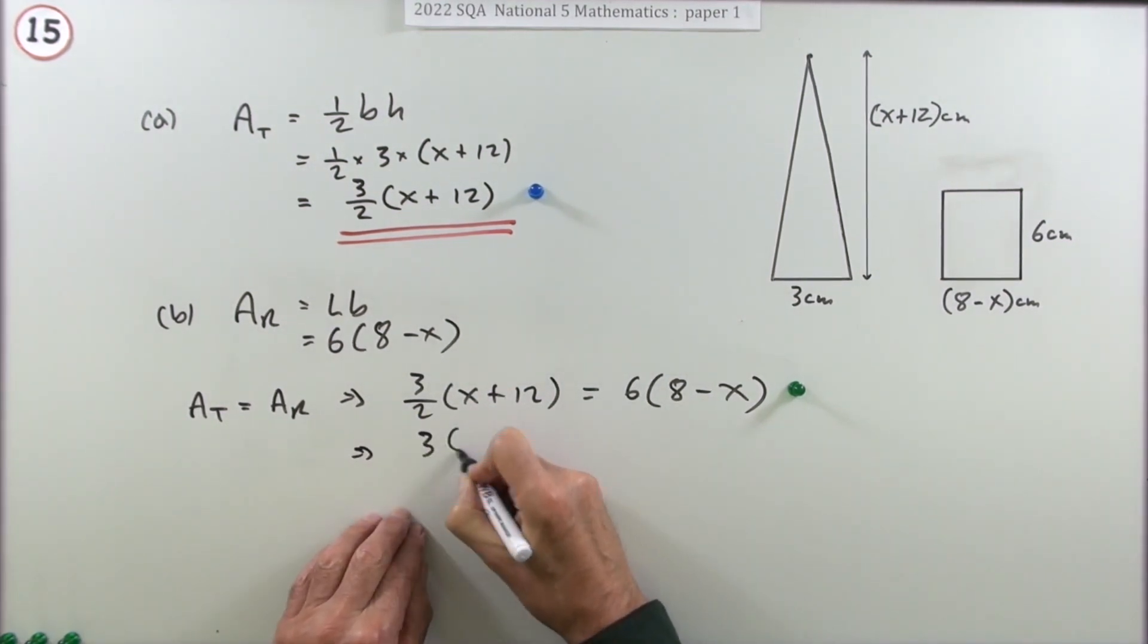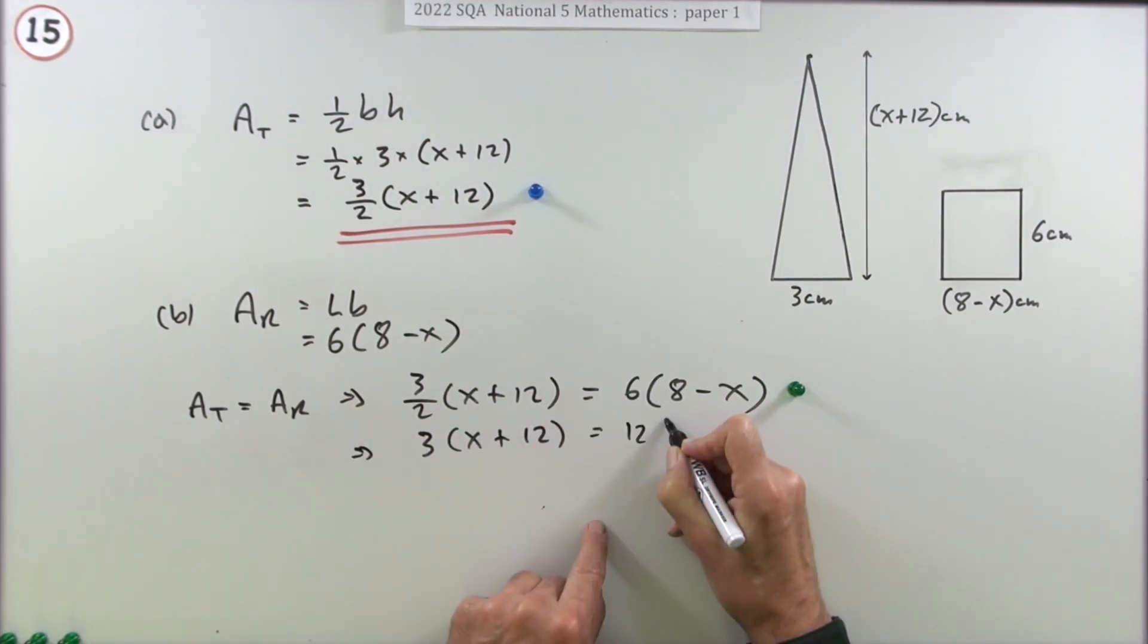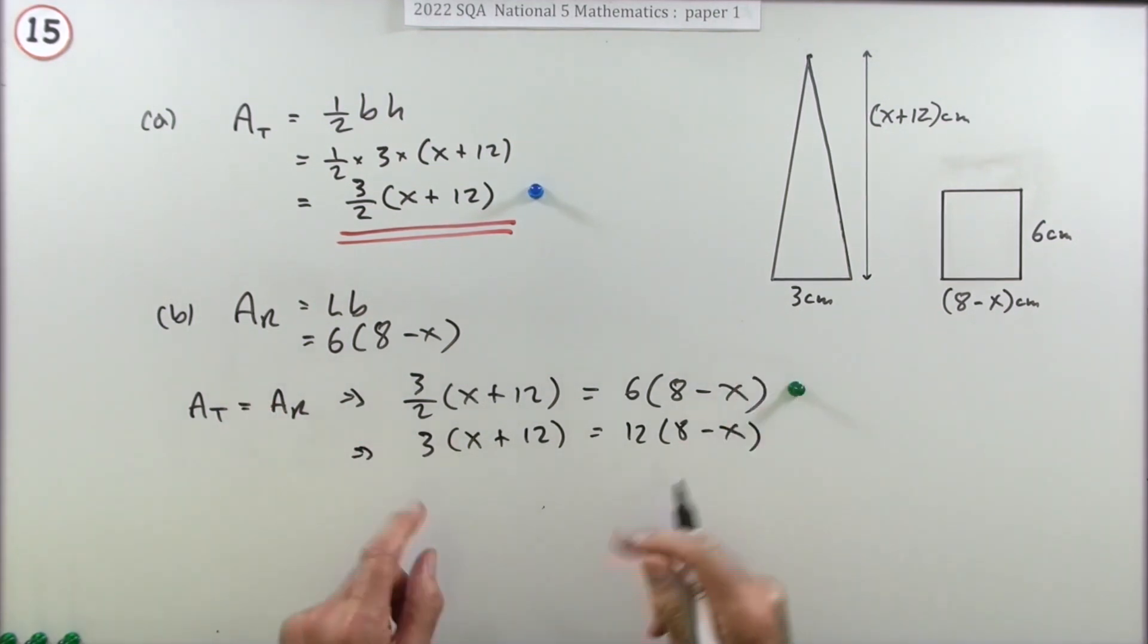So that means this side would become 3 and this side would become 12. Remember you only multiply once. You don't multiply that by 2 and that by 2, then you're multiplied by 4. There's no need to multiply by 4. So get rid of the fractions. In fact, that's the first mark.